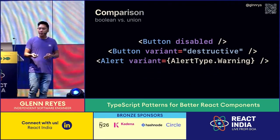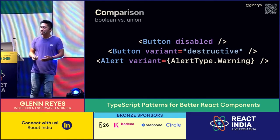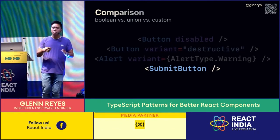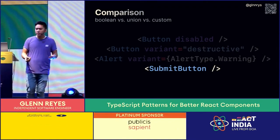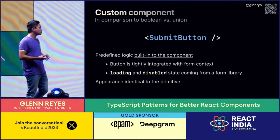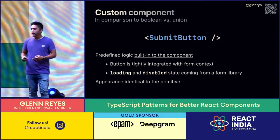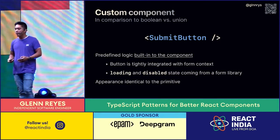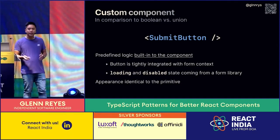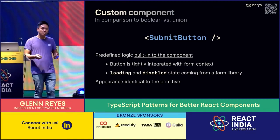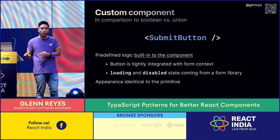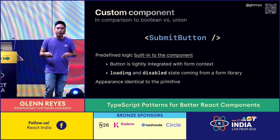Comparing booleans, unions, and enums are great for passing states. But sometimes you may have seen custom components — instead of a button variant prop, maybe a PrimaryButton or SubmitButton. Custom components should be components that implement predefined logic built into them. For example, if you have a button tightly integrated with form context, it's a great idea to put that logic inside. You might add states derived from the component itself. I think it's important, though, that the appearance should look identical to your primitives.